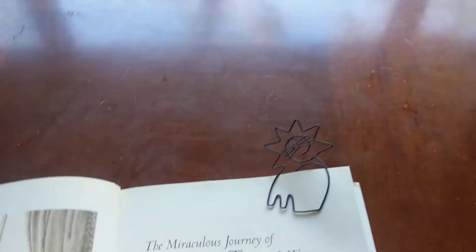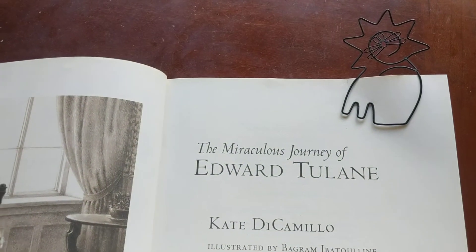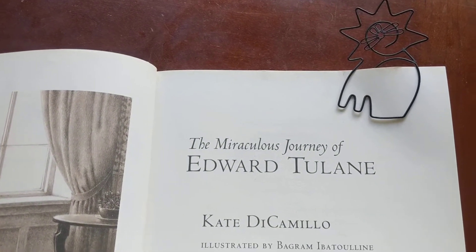Hello and welcome to another installment of Reading with Miss Rachel. Today we'll be reading Chapter 6 of The Miraculous Journey of Edward Tulane, written by Kate DiCamillo, illustrated by Mr. Bob.